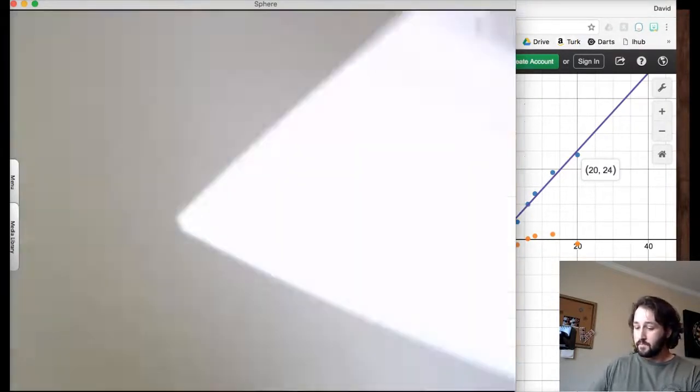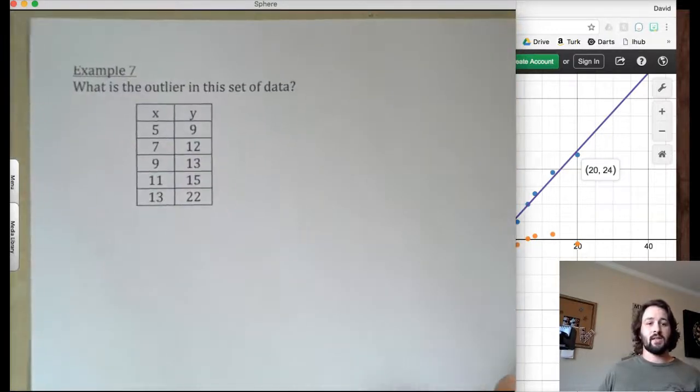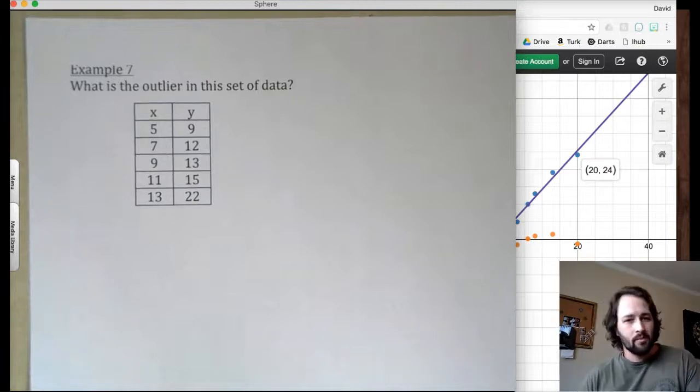Alright. Going back to you. We're almost done. What is the outlier in this set of data?